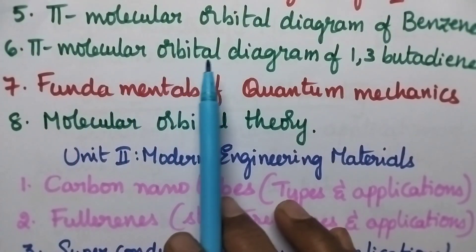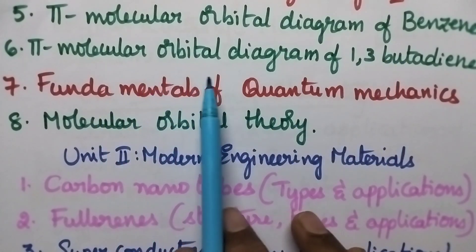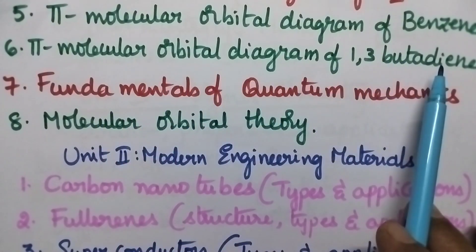Fifth question, pi molecular orbital diagram of benzene. Sixth question, pi molecular orbital diagram of 1,3-butadiene.